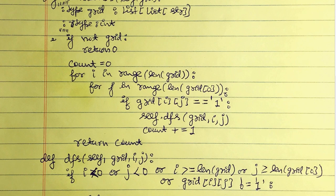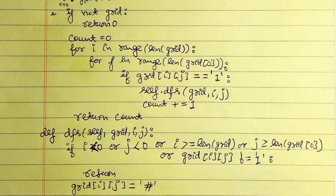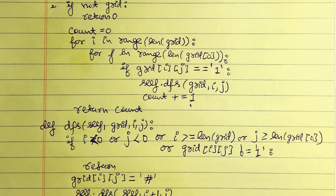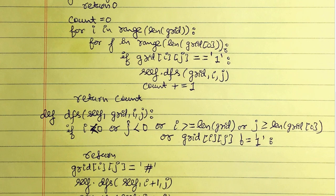For each i and j value we check if the grid value equals the string '1'. If it does, we call self.dfs, passing the grid and the i and j indexes, to do the flipping. After calling DFS we increase the count by one. Once we have gone through the entire grid we return the count.